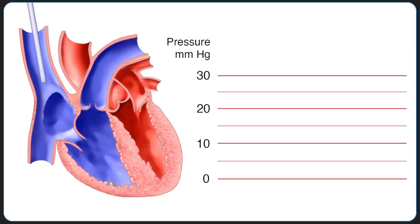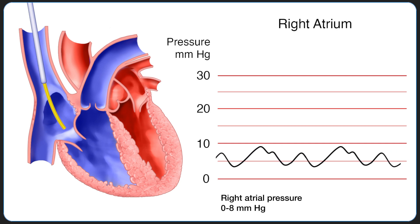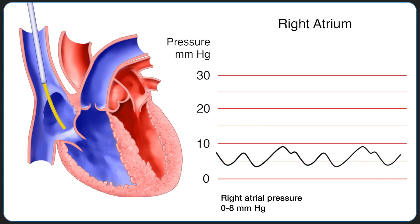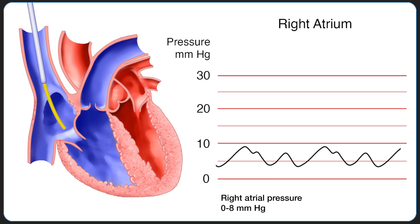The PA catheter is initially advanced through the introducer sheath into the internal jugular vein and subsequently traverses into the superior vena cava and then the right atrium. At this point, the monitor will demonstrate a central venous pressure, or CVP waveform, which consists of 5 phases, 3 peaks, and 2 troughs.